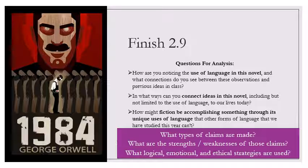But it was also clear that an all-around increase in wealth threatened the destruction of a hierarchical society. If it once became general, wealth would confer no distinction. For if leisure and security were enjoyed by all alike, the great mass of human beings, who are normally stupefied by poverty, would become literate and would learn to think for themselves. In the long run, a hierarchical society was only possible on a basis of poverty and ignorance.